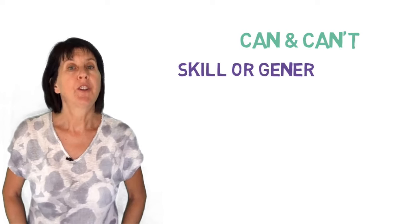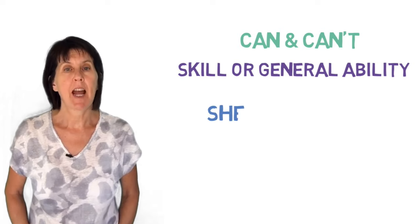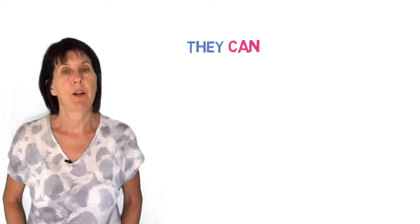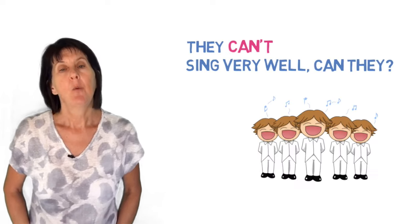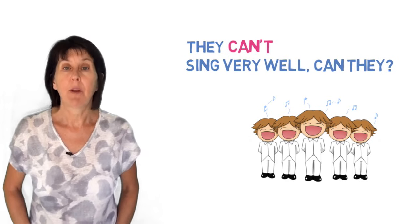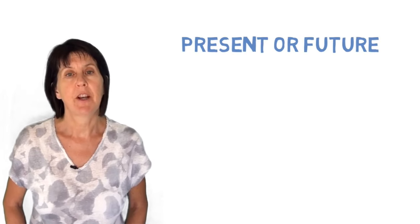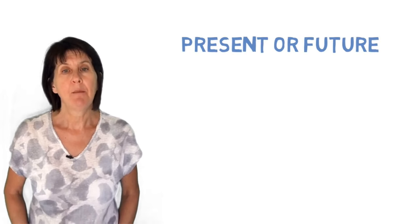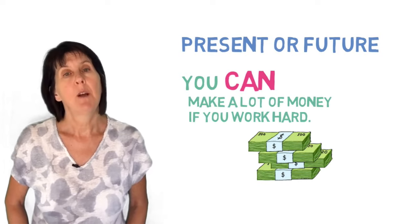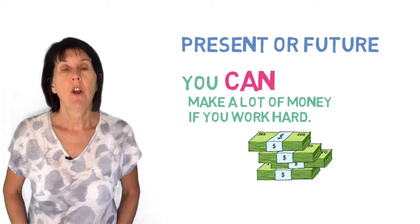So let's start with can and can't. We use can and can't to talk about someone's skill or general abilities. So she can swim like a fish, or they can't sing very well, can they? We use can to talk about the ability to do something at a given time in the present or the future. So you can make a lot of money if you work hard — this is referring to the future — or referring to the present: we can't see anything.